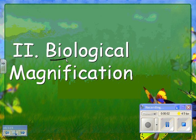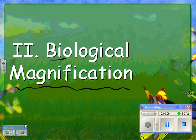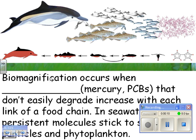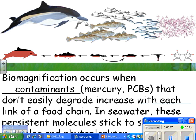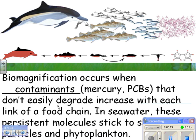Biological magnification — 'biological' means it has to do with life, and 'magnification' is when you have more of something or it gets bigger and bigger. Biomagnification occurs when contaminants like mercury or PCBs — and here's the important part — that don't easily degrade, increase with each link of the food chain.